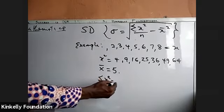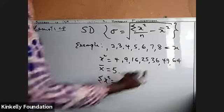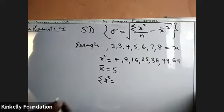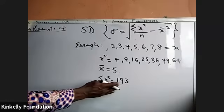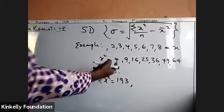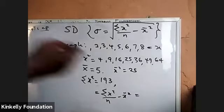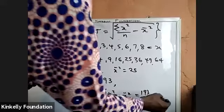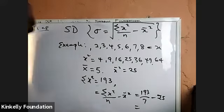Summing x squared: the total comes to 193. So using the formula, 193 divided by 7 minus 5 squared (which is 25) gives us approximately 2.57, which rounds to give us the variance value.